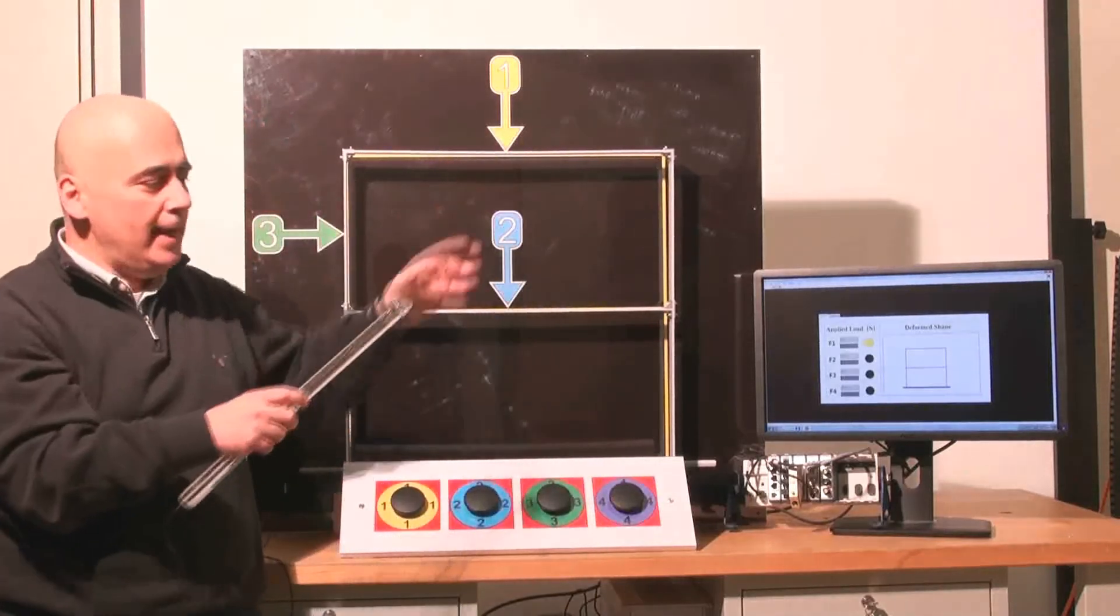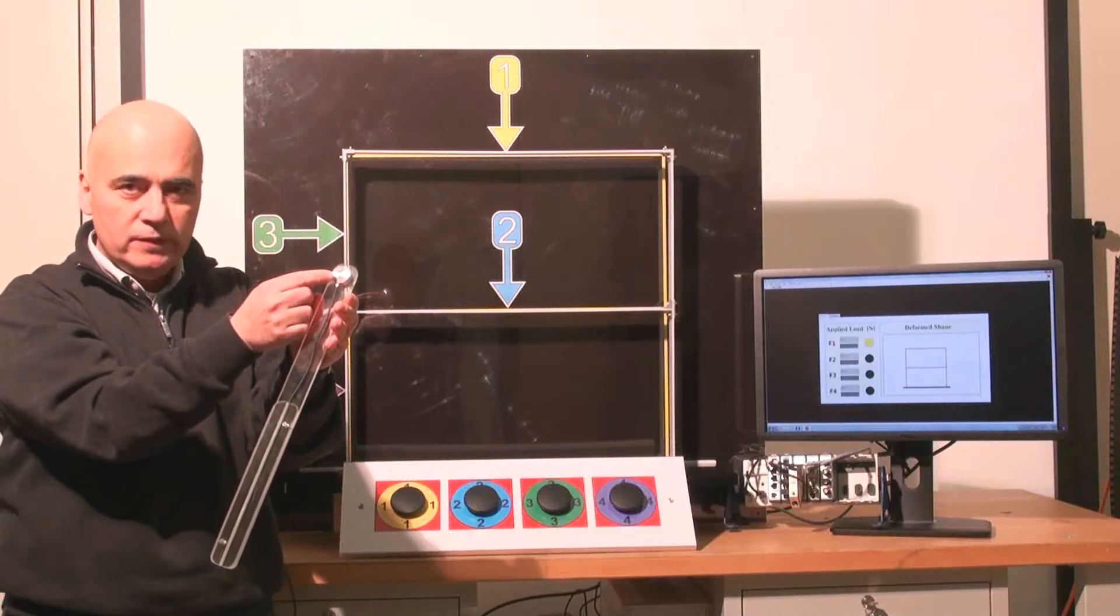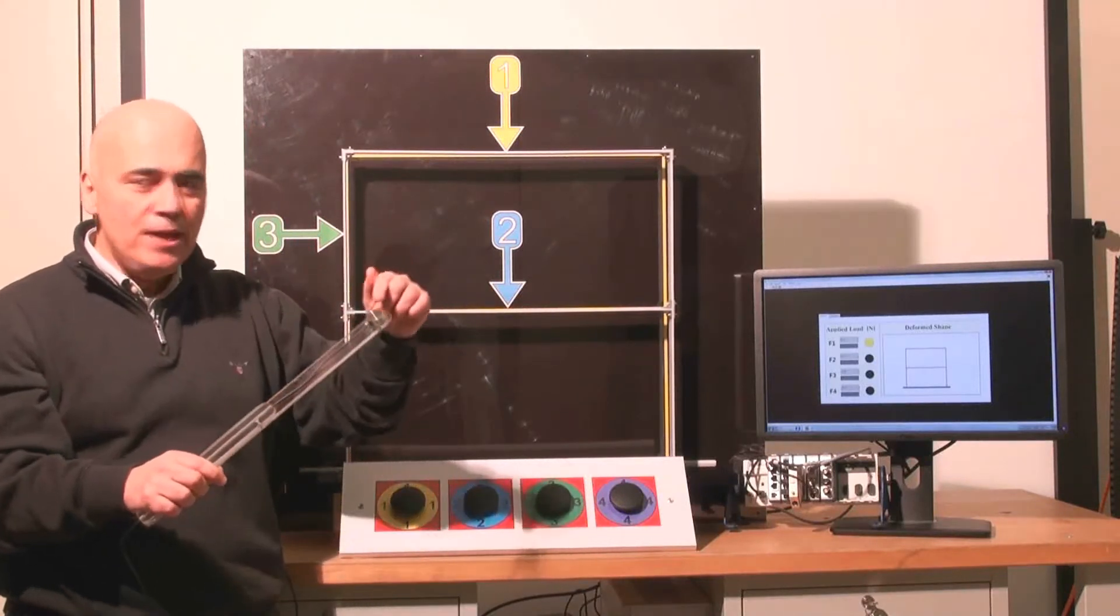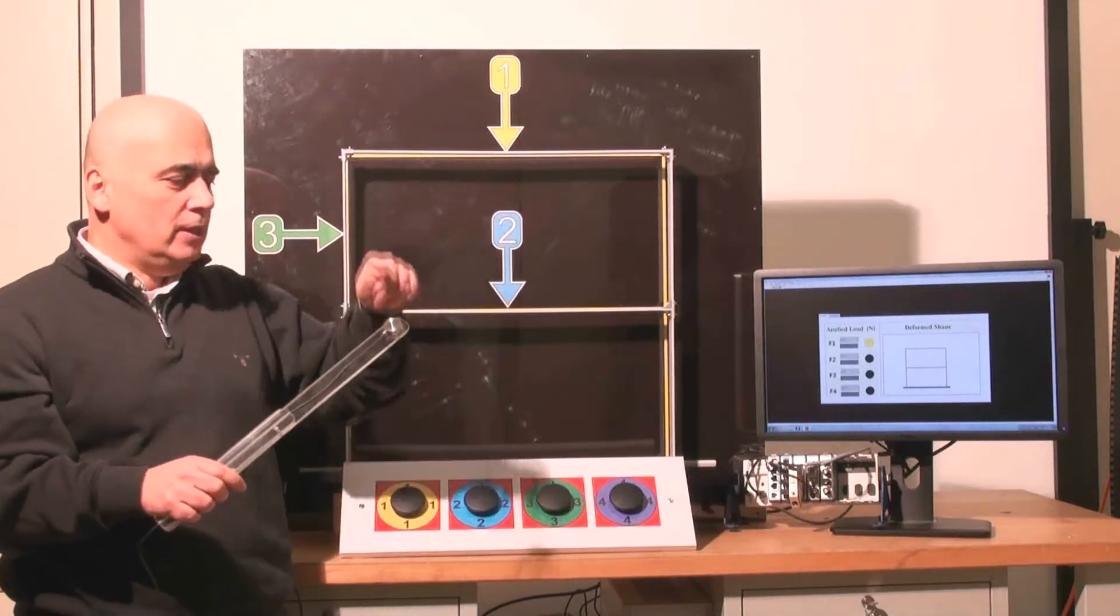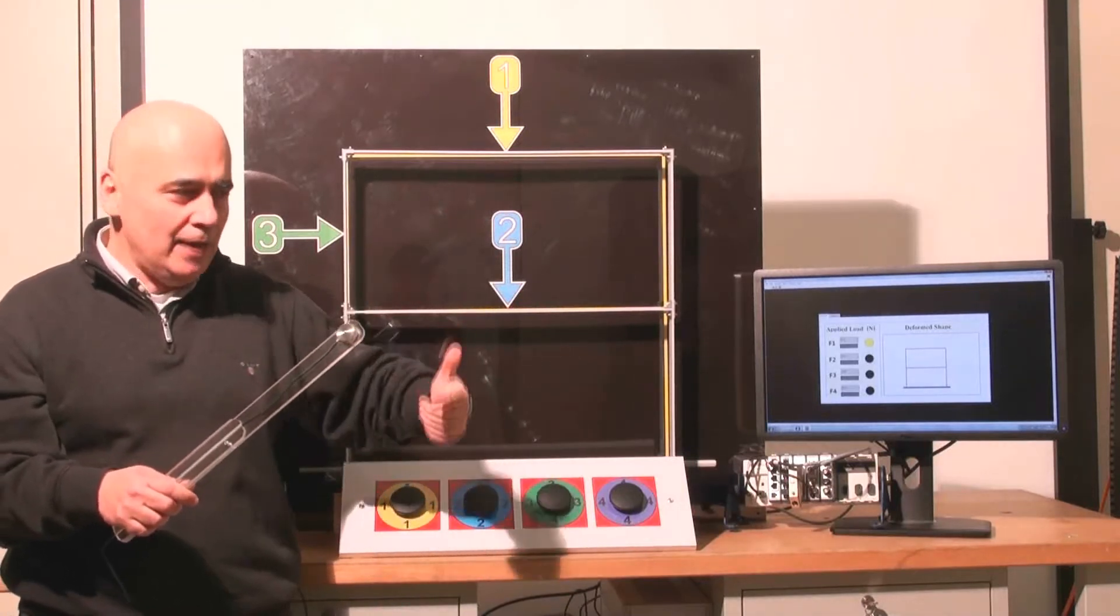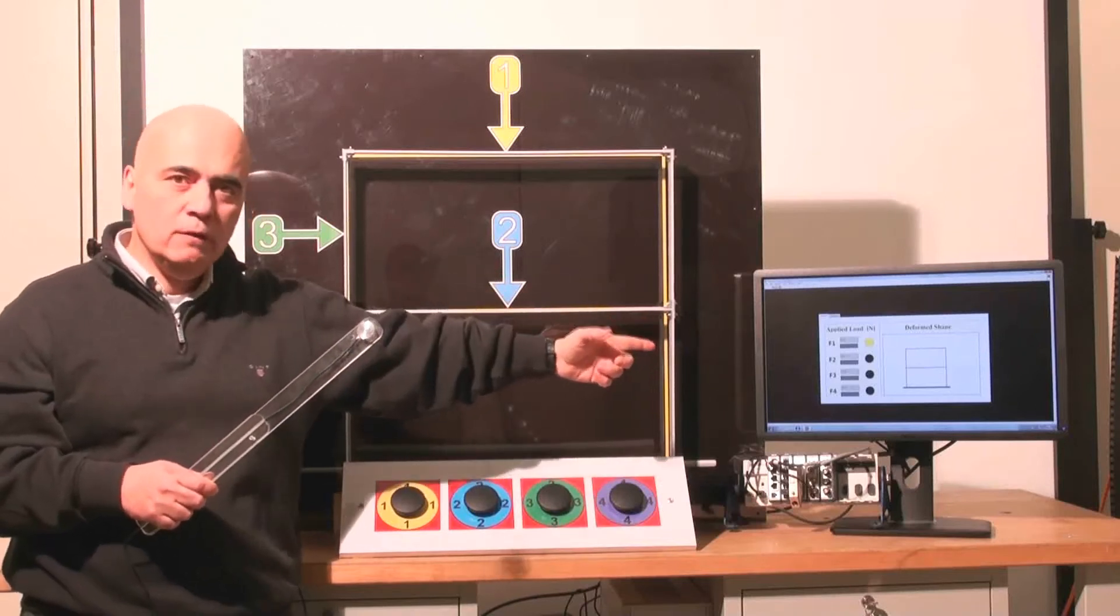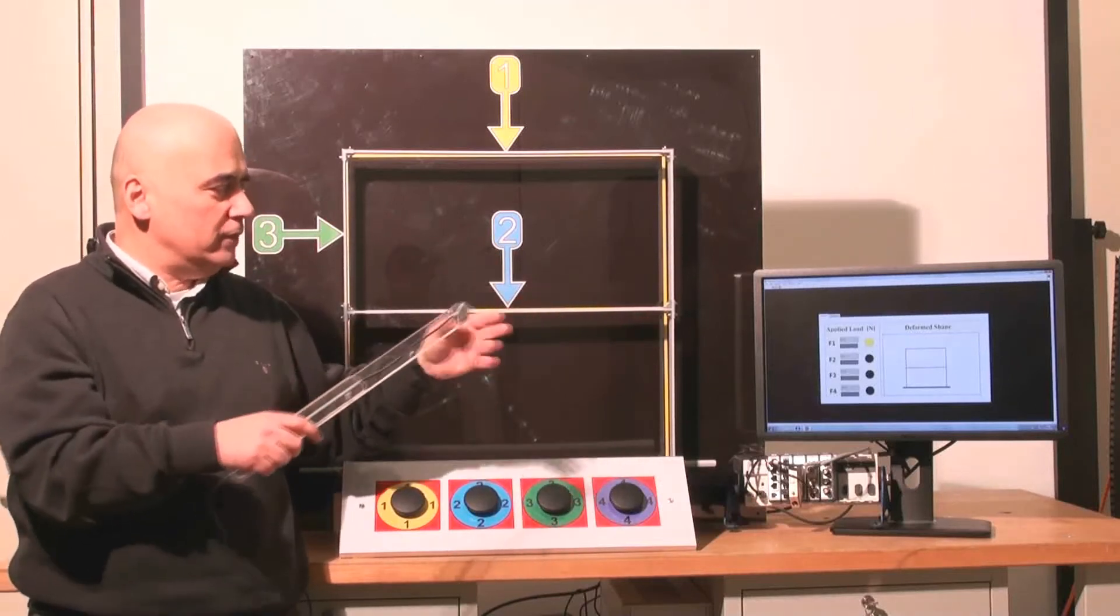But if instead of loading by hand, I load it with this device where we have a loading cell mounted here, then the loading cell measures the contact force and the contact force is transmitted to a computer. The computer in real time calculates the structure and shows in the monitor the shape of the deformation.